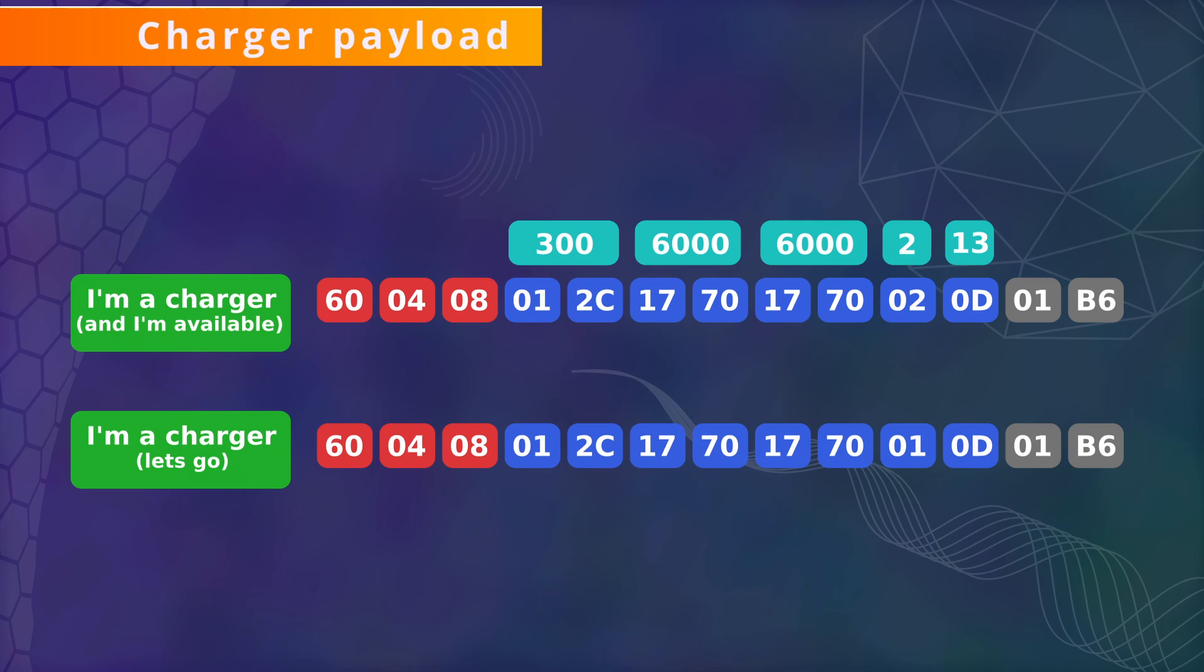The second last byte of 'I'm a Charger' is 2 in the first exchange and changes to 1 in the second exchange. I think 2 means waiting and 1 means ready to charge. The last byte is decimal 13, which is the total number of bytes in the message including the checksum.